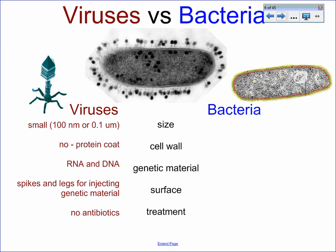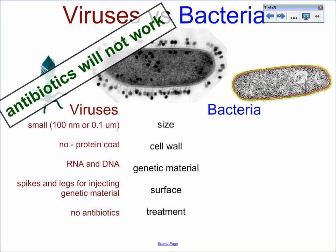Viruses are small — about 100 nanometers or a micrometer. They have a protein coat and are not truly cells. Inside they might have DNA or RNA, and they can inject it into, say, a bacteria, as you see here. Antibiotics are not effective against them, as we'll talk about in a second.